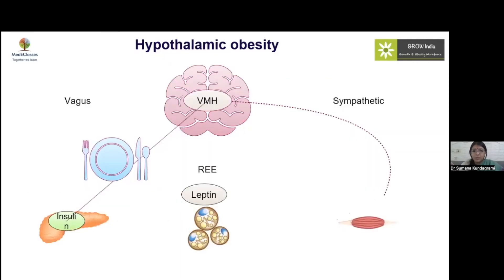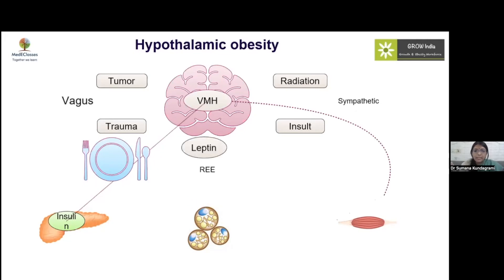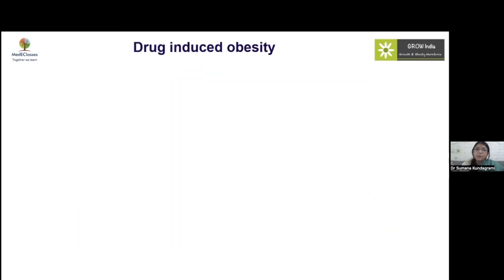Hypothalamic obesity occurs when there is an insult to the hypothalamus — from a tumor, radiation exposure, trauma, or other injury — causing pathological hyperphagia. Regarding drug-induced obesity, it is very important not to miss taking a thorough drug history when approaching a case of obesity.